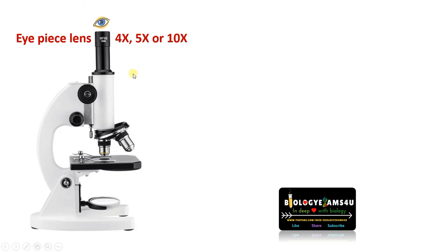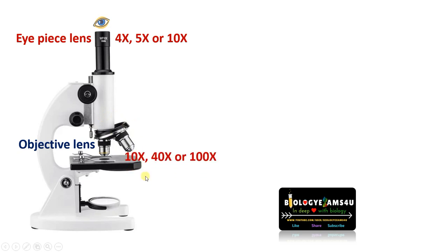4x means four times magnified. The second lens system is the objective lens — normally three objective lenses are attached to the nosepiece. The magnification may be 10x, 40x, and 100x. So we are using two lenses to view the object that is placed on the slide, which is why it is called a compound microscope.